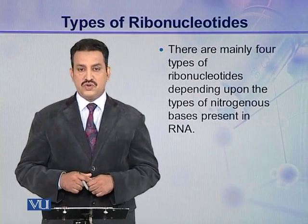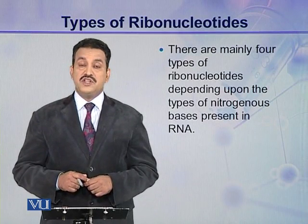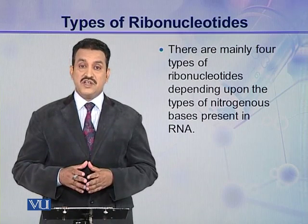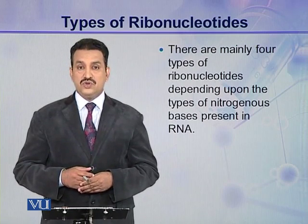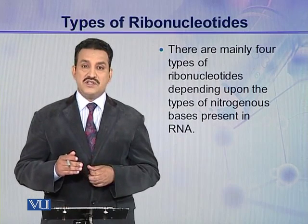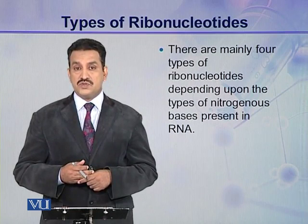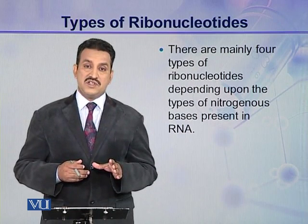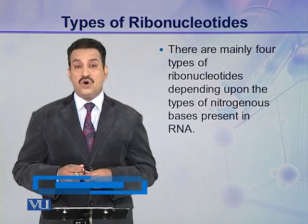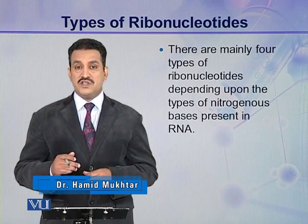There are four main types of ribonucleotides present in cells, and it depends upon the types of nitrogenous bases present in a ribonucleotide. You know the structure of a ribonucleotide — there are three components: one is pentose sugar (ribose sugar), the other one is phosphoric acid, and the third one is nitrogenous base. The two components — phosphoric acid and ribose sugar — are the same in all ribonucleotides; the only difference is in the nitrogenous base.